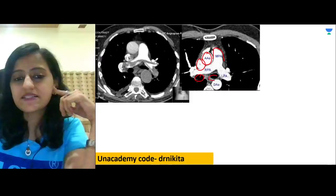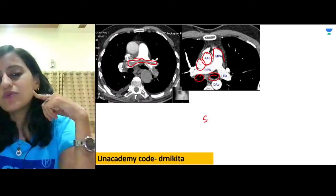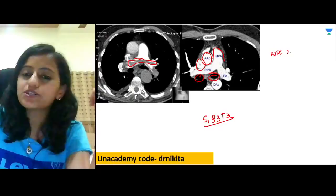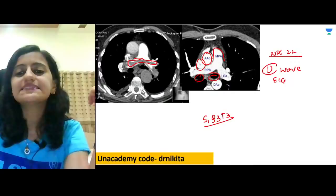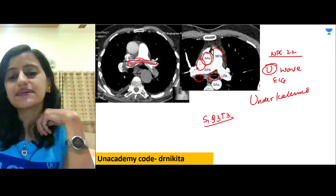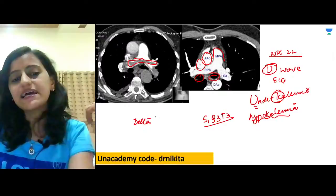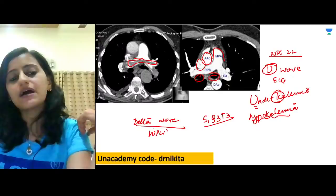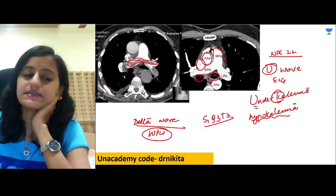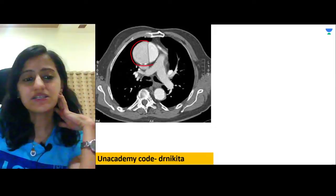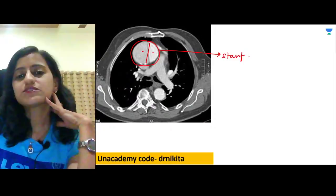ECG in pulmonary embolism: most specific sign is S1Q3T3 pattern; most common finding is sinus tachycardia. U wave on ECG is seen with hypokalemia. Delta wave is seen with WPW (Wolff-Parkinson-White) syndrome — short PR and broad QRS. Aortic dissection involving the ascending aorta is Stanford type A and requires surgical management.